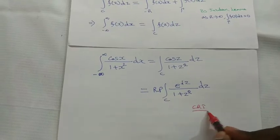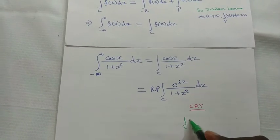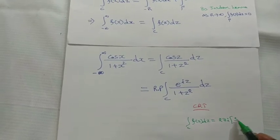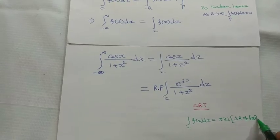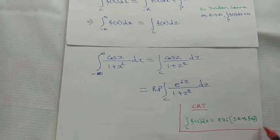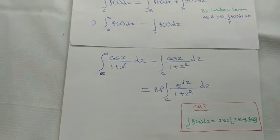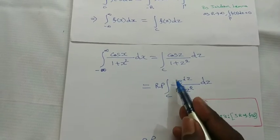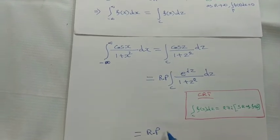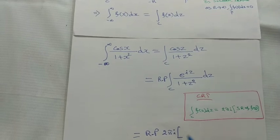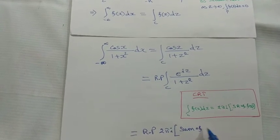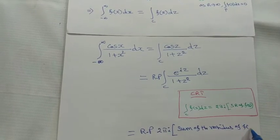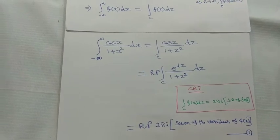Now we apply the Cauchy Residue Theorem. The Cauchy Residue Theorem states that the integral over C of f(z) dz equals 2 pi i times the sum of the residues of f(z). This gives us equation number one: the real part of 2 pi i times the sum of the residues of f(z).